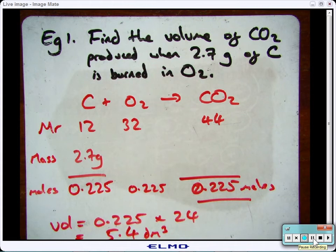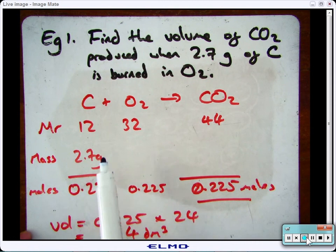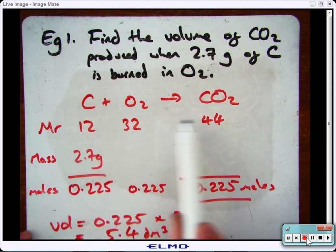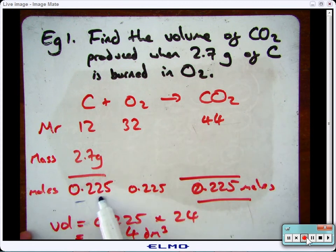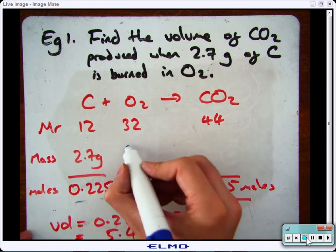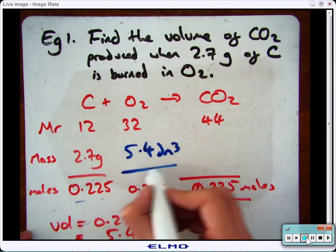I'll give you another example. So what happens if you wanted to find out the amount of oxygen needed to produce the carbon dioxide? In this case, what you would do is exactly the same. So you'd have your molecular formula for each. You'd know that you've got your mass there, so you'd be able to work out your moles. And then it would be exactly the same again. So 0.225 times 24, you would need 5.4 decimeter cubed of oxygen.